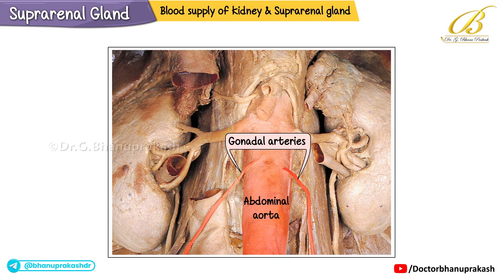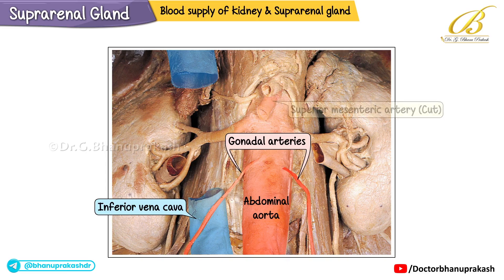On the right side, the right gonadal artery crosses over the inferior vena cava. Additionally, the cut end of the superior mesenteric artery is visible in the illustration, completing the view of the vascular supply to these organs.